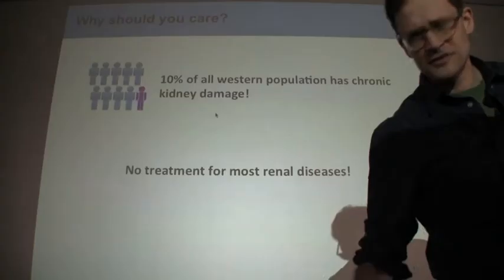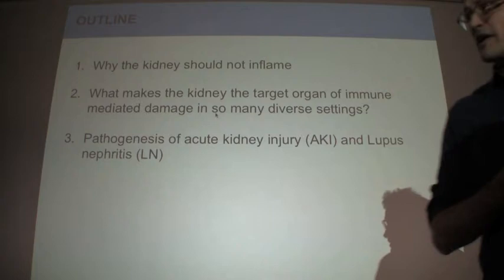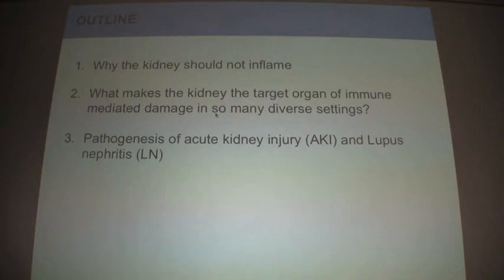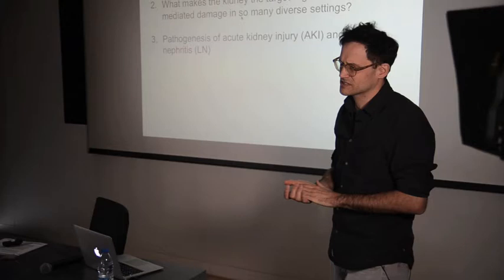What I would like to talk about — my agenda — I would like to start by why the kidney shouldn't inflame at all. Then second, what makes the kidney the target organ for inflammation. And in the end, I would like to focus on the pathogenesis of acute kidney injury, and finally on lupus nephritis, to also set the stage a little bit for antibody.